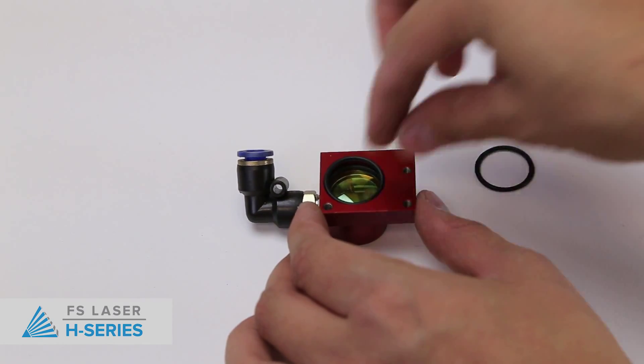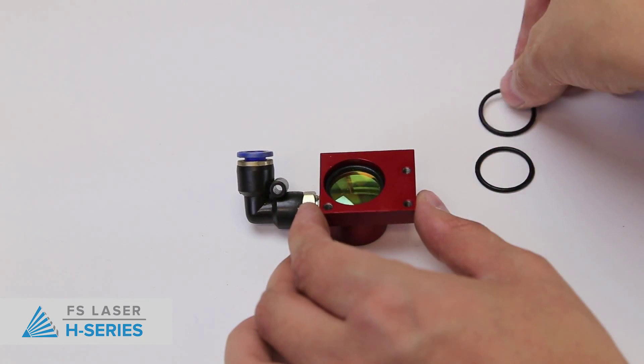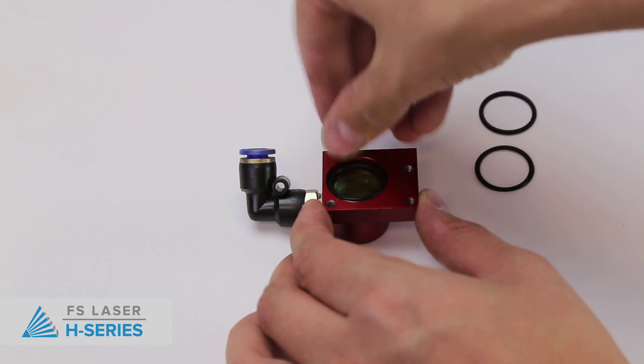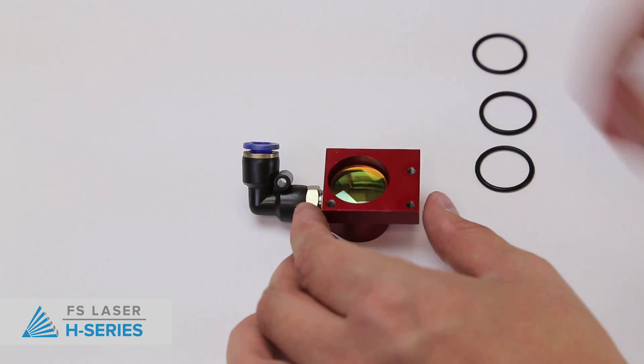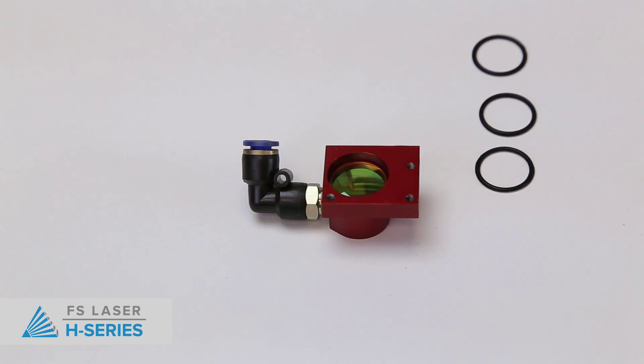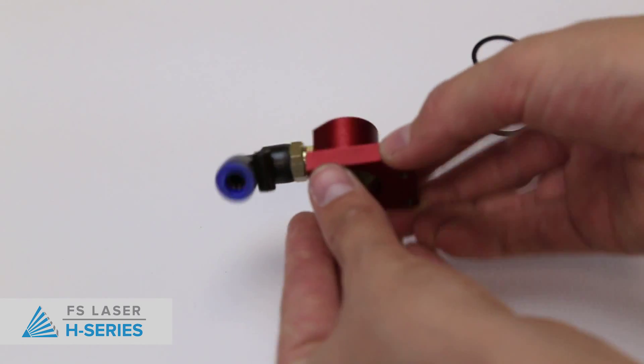Remove the three o-rings that are on top of the lens. Carefully remove the lens.